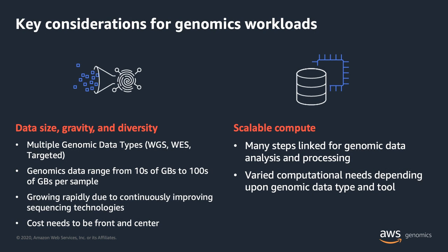When it comes to processing genomics data or running genomics workloads, there are a couple of key considerations. First is the size of genomics data. There are multiple types — whole genome sequencing, whole exome sequencing, targeted panels — and the size of the data can range on the order of tens of gigabytes to hundreds of gigabytes per sample. And the amount of data is rapidly growing because of continuous improvements in sequencing technologies.